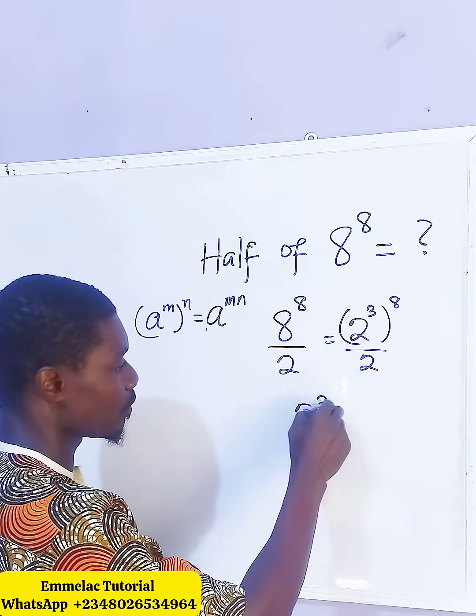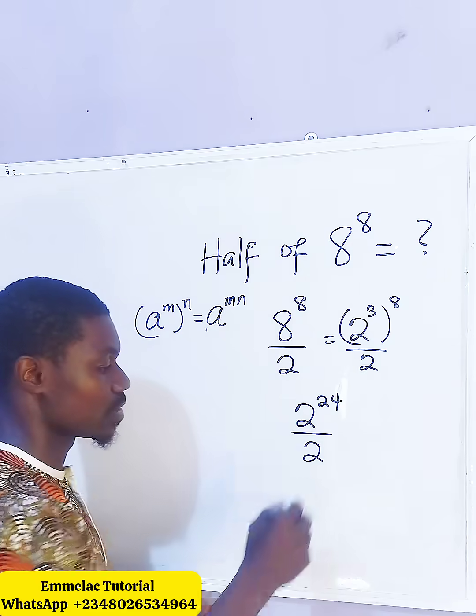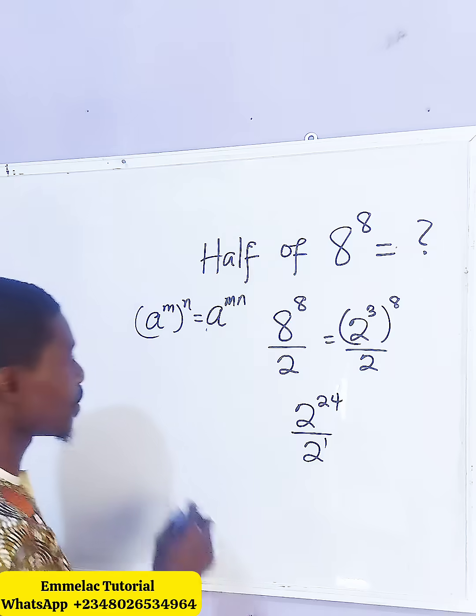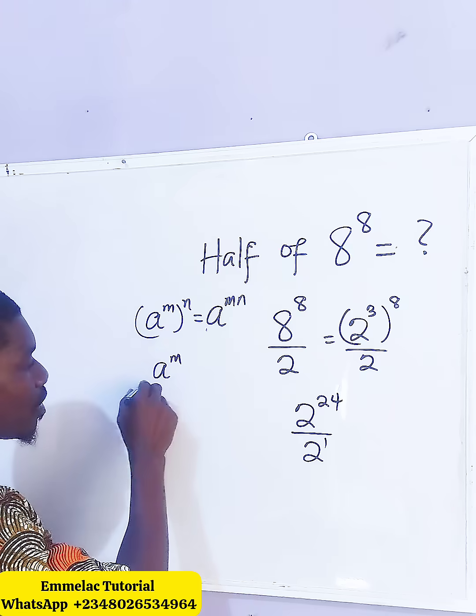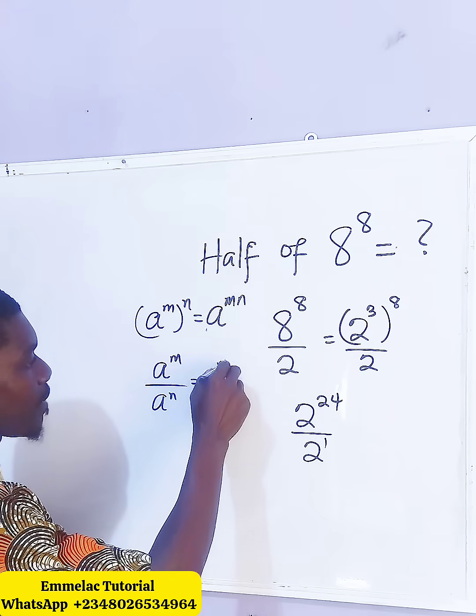So here we have 2 raised to the power of 24 all over 2. And this 2 simply means 2 raised to the power of 1. And according to the law of indices again, a raised to the power of m, all divided by a raised to the power of n, simply means a raised to the power of m minus n.